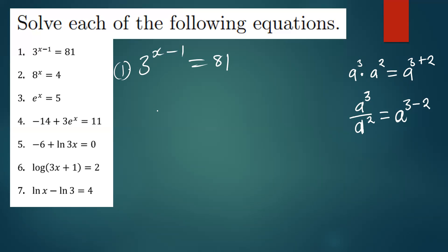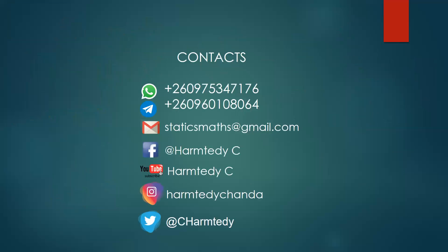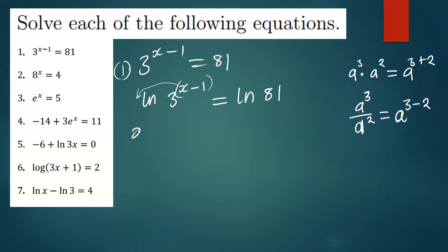Using the logarithmic format, we introduce ln on both sides. On the left side we have ln(3^(x-1)), and on the right side we have ln(81). Remember, the power can drop down — the same rules that apply on logarithms also apply on ln. So we drop the power, giving us (x-1) · ln(3).